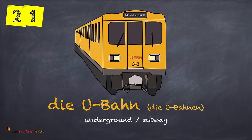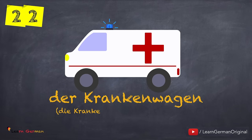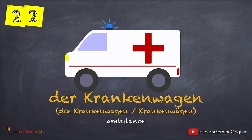Die U-Bahn, die U-Bahnen — noch einmal — die U-Bahn, die U-Bahnen. Der Krankenwagen, die Krankenwagen — noch einmal — der Krankenwagen, die Krankenwagen. In Austria or in Bavaria you also use the plural form die Krankenwagen.